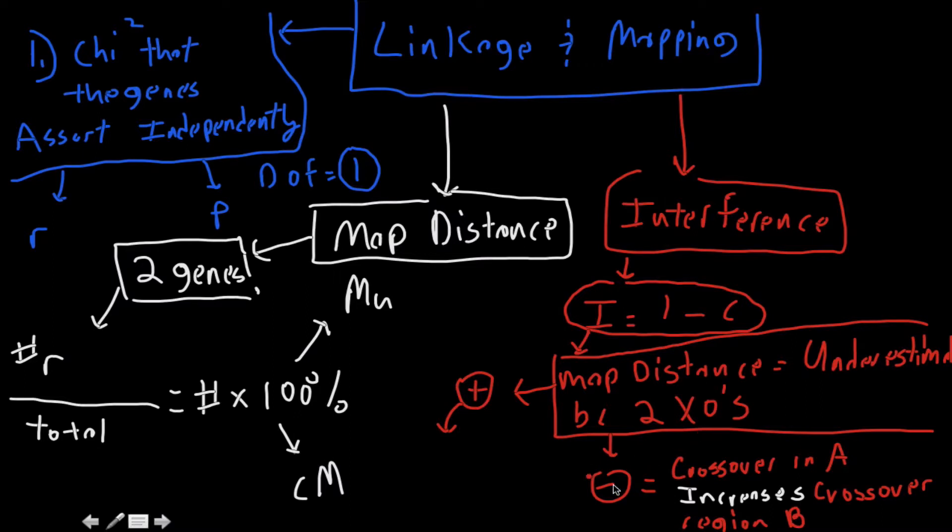Okay, so positive interference means just the exact opposite. A positive interference would be where crossover in region A decreases crossover in region B. So I'm going to go ahead and write that out in green. And that's the norm. Decreases. Running out of room here.